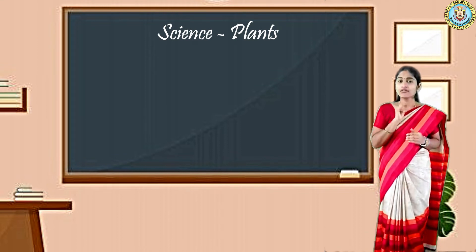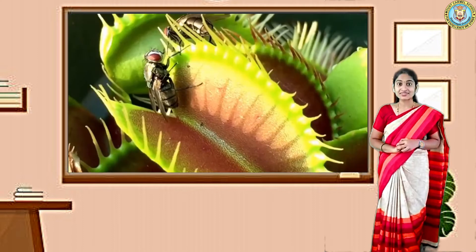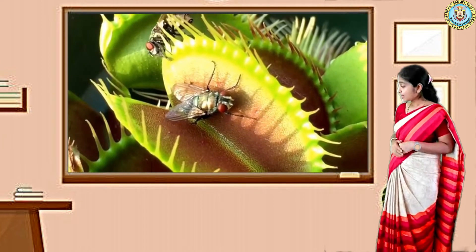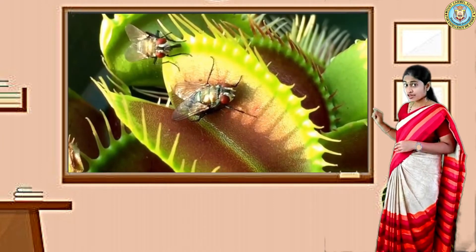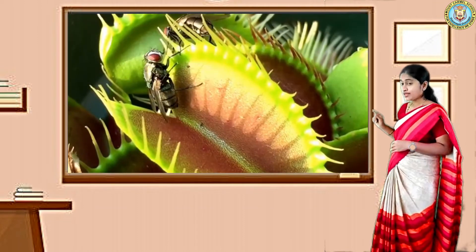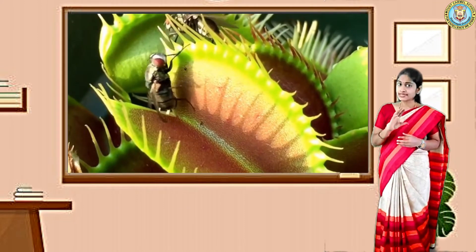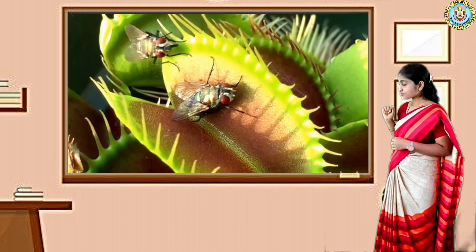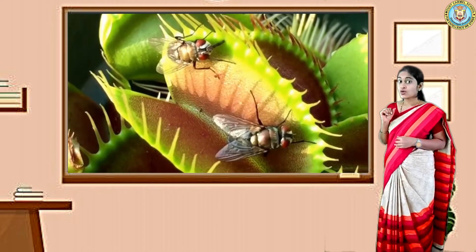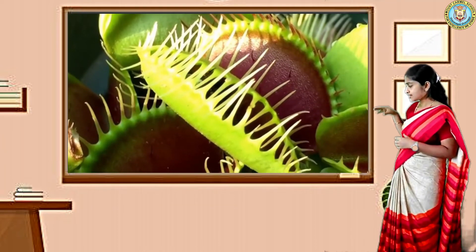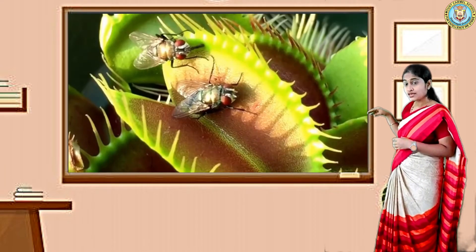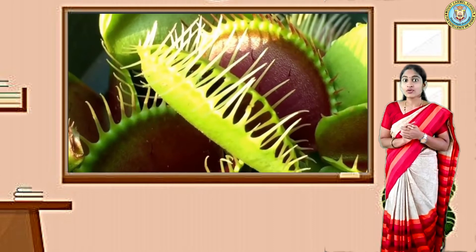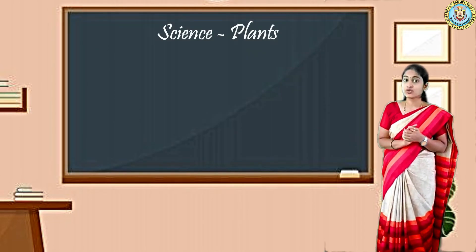Here is another example of an insectivorous plant — this is Venus flytrap. Look at this plant carefully. Whenever an insect sits on the surface or leaf of this plant, it immediately grabs that insect and closes. This is the example for an insectivorous plant.